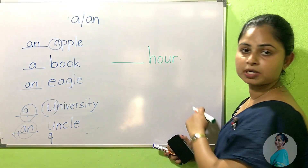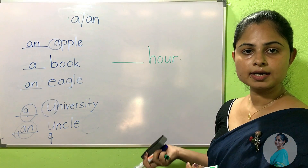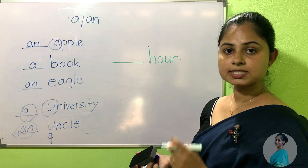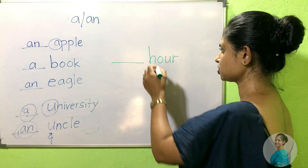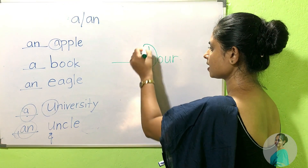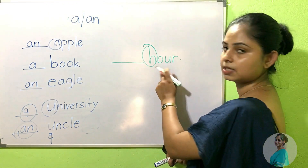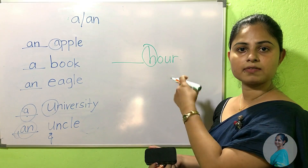How to pronounce this word? It's a vowel. It's a vowel — a major word. Here we can use 'an'.